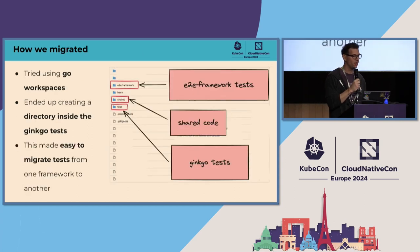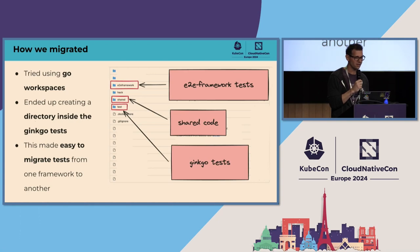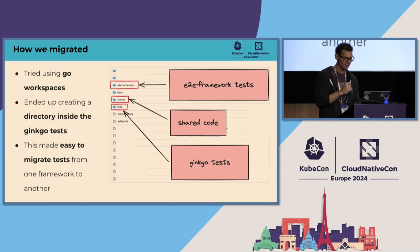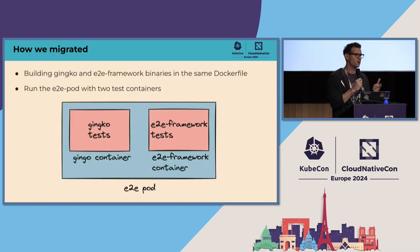How did we do the migration? We wanted to use the same Go module but tried Go workspace — we couldn't figure it out and it didn't work for us. What we ended up doing was creating a subdirectory inside the old Ginkgo tests with the E2E framework and then slowly migrating one test at a time. Every time we needed to add shared code, we created an external library to share code between the two frameworks. When building, we built both binaries in the same Dockerfile. When we ran our tests, we had the two containers running Ginkgo tests with their own flags and the E2E framework with its own flags.